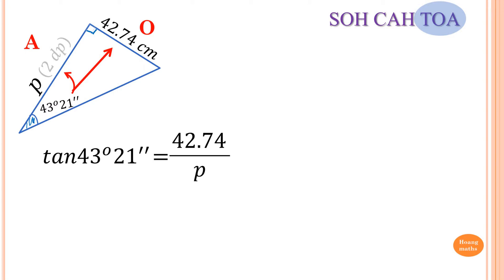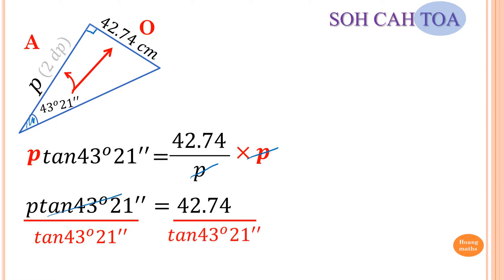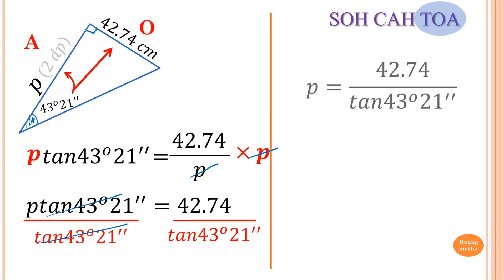Now because we solve for P, we multiply P on both sides to get rid of the P in the denominator. So now P times tan of 43 degrees 21 minutes is equal to 42.74. Next, we divide both sides by tan of 43 degrees 21 minutes to make P the subject. So P is equal to 42.74 over tan of 43 degrees 21 minutes.